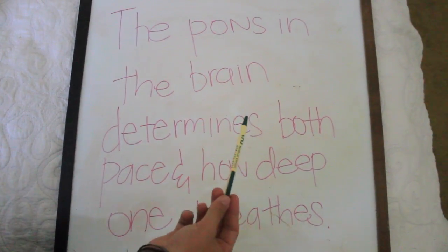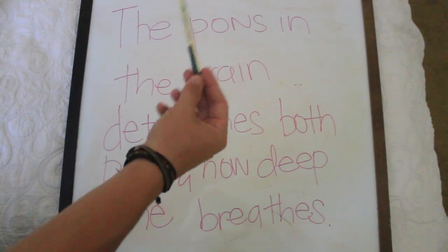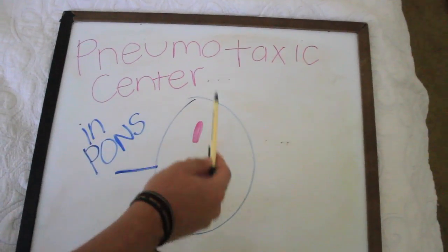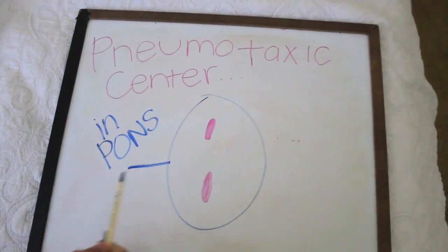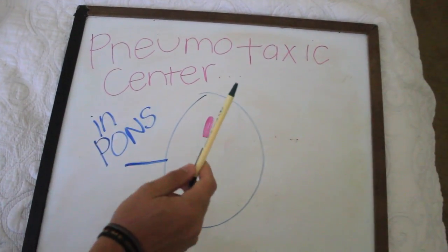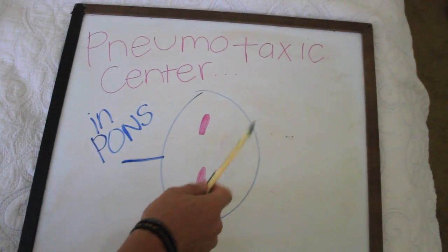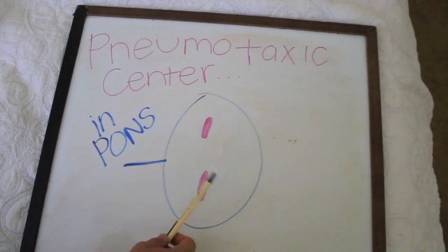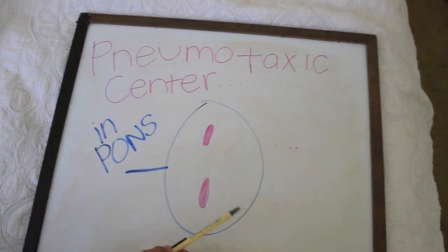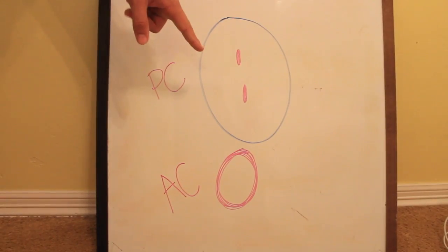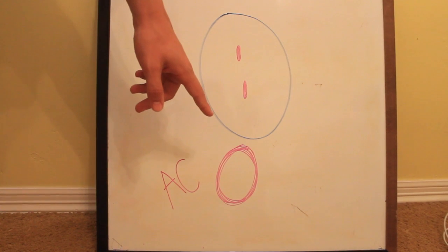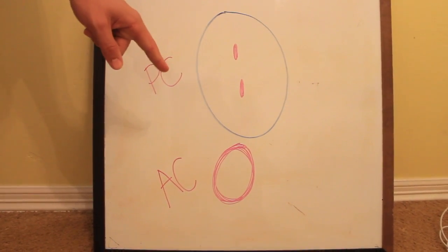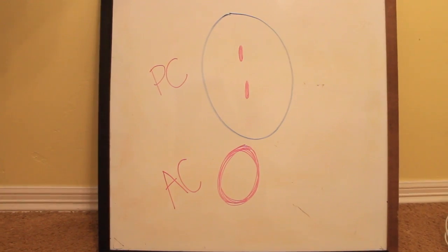So, like running or jogging versus walking, it would know the difference. The pneumotaxic center in the PONS does two things: first, it inhibits the apneustic center; secondly, it promotes passive or active exhalation. Below the pneumotaxic center we have the apneustic center, which provides continuous stimulation to its DRG center.